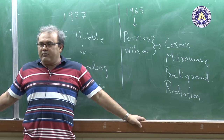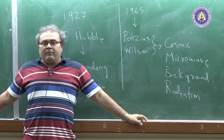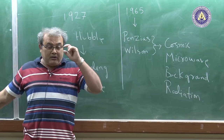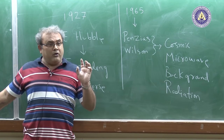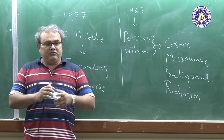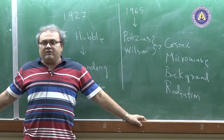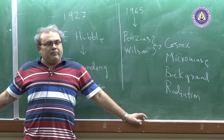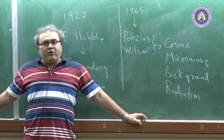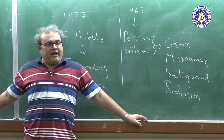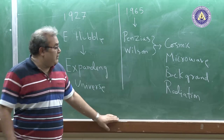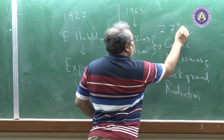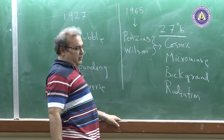When they analyzed it, they understood that this microwave radiation is more like a blackbody radiation. Blackbody radiation is produced when photons and matter are in thermal equilibrium with each other. This blackbody radiation has a temperature of 2.7 degrees Kelvin at the present time.